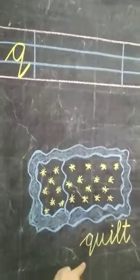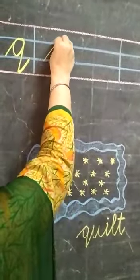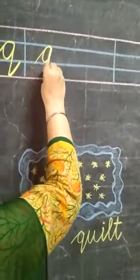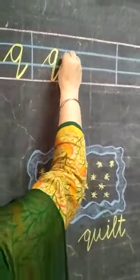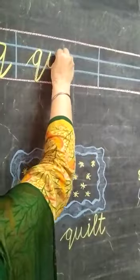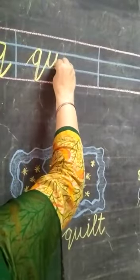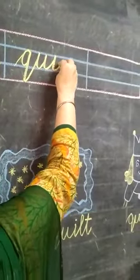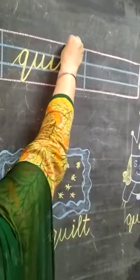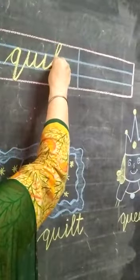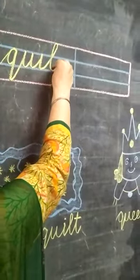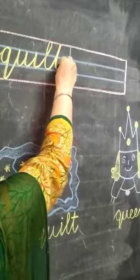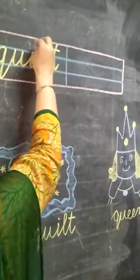Spelling of Quilt is Q, U — U will come in the two middle lines. I — I will come in the two middle lines. L — L will come in the upper three lines. Then T. Quilt.